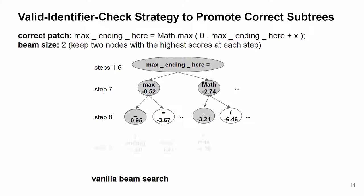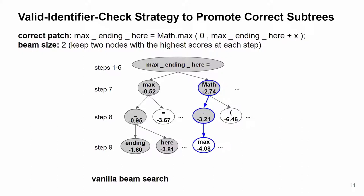And at step 9, after the NMT model calculates the score, the vanilla beam search will select 'ending' and 'here' to expand, since they have higher scores. Now the blue path to the correct patch is discarded, since 'max' is not selected, and we miss the correct patch forever. However, with the valid identifier check strategy, it easily knows that the red path contains an invalid identifier — 'max_here' — while the blue path contains 'math.max', which is valid for this bug. Thus, it will set the score of 'here' to negative infinity, as it's impossible to be correct. Then the beam search will choose 'ending' and 'max' to expand, which includes the path to the correct patch. In this example, the vanilla beam search misses the path to the correct patch, while the valid identifier check strategy promotes it.